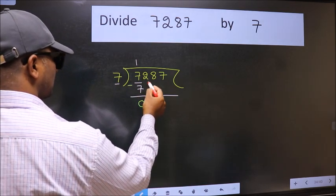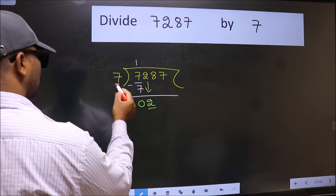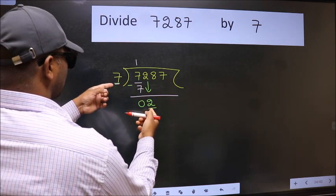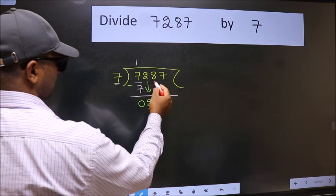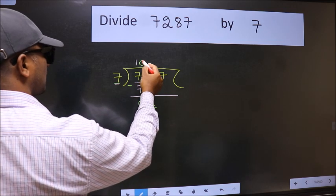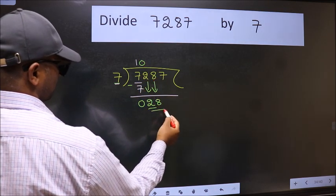After this, bring down the beside number. So 2 down. Now here we have 2 and here 7. 2 is smaller than 7, so we should bring down the second number. And the rule to bring down second number is put 0 here. Then only we can bring this number down. So 28.